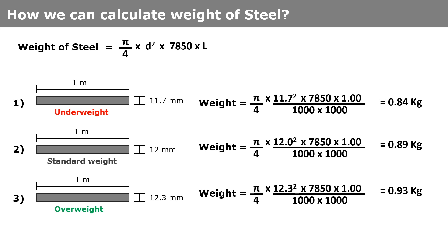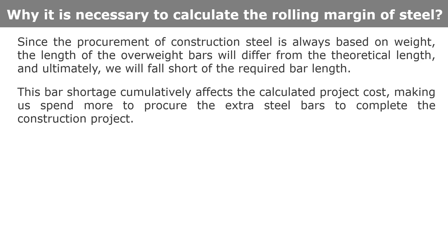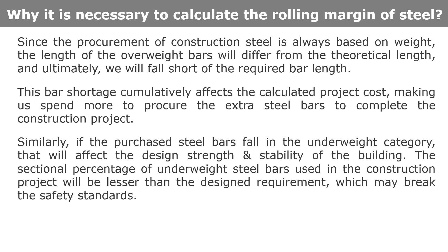Looking at the above three examples, the third option is overweight. Since the procurement of construction steel is always based on weight, the length of the overweight bars will differ from the theoretical length, and ultimately we will fall short of the required bar length. This bar shortage cumulatively affects the calculated project cost, making us spend more to procure extra steel bar to complete the construction.